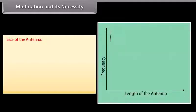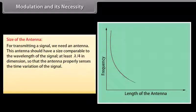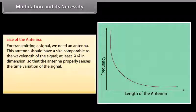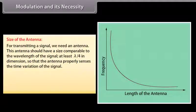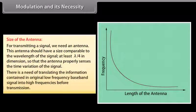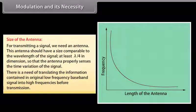For transmitting a signal, we need an antenna whose size should be comparable to the wavelength of the signal — at least λ/4 in dimension — so that the antenna properly senses the time variation of the signal. For an EM wave of frequency 30 kilohertz, the wavelength λ is 10 kilometers, and it is not possible to construct and operate such a long antenna. Therefore, there is a need to translate the information contained in the original low-frequency baseband signal into high frequencies before transmission.